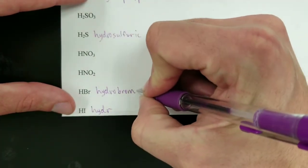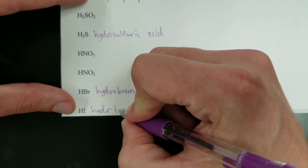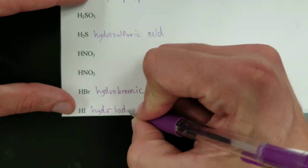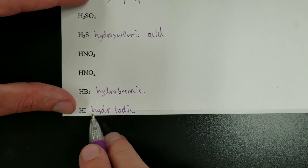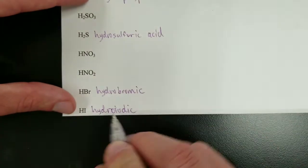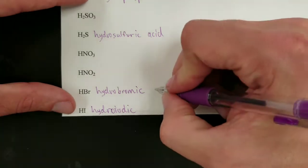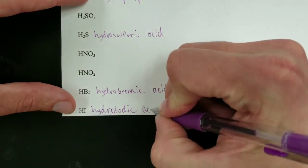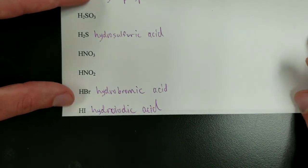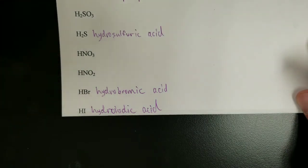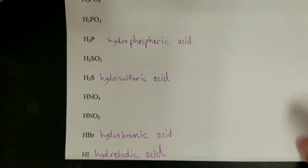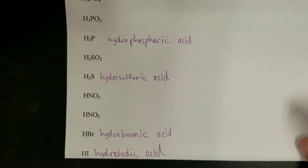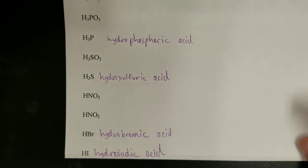Following the same pattern, bromine becomes hydrobromic acid and iodine becomes hydroiodic acid. Notice the application of this naming system is pretty uniform throughout. That's relatively easy — those are the ones without oxygen.